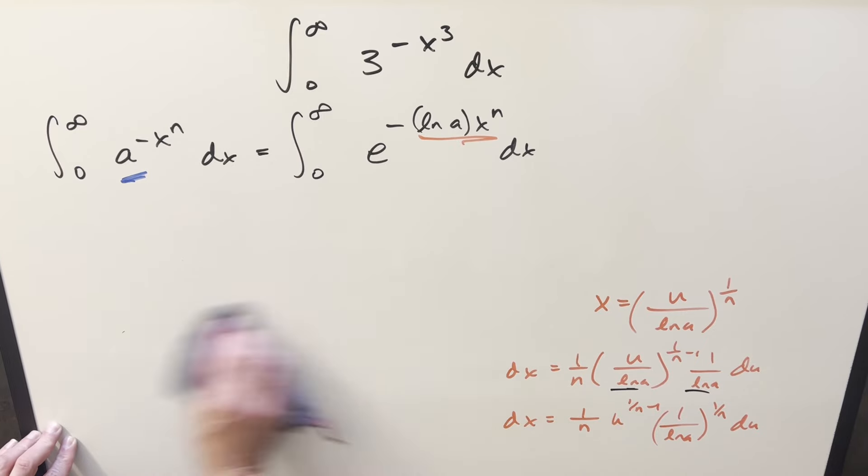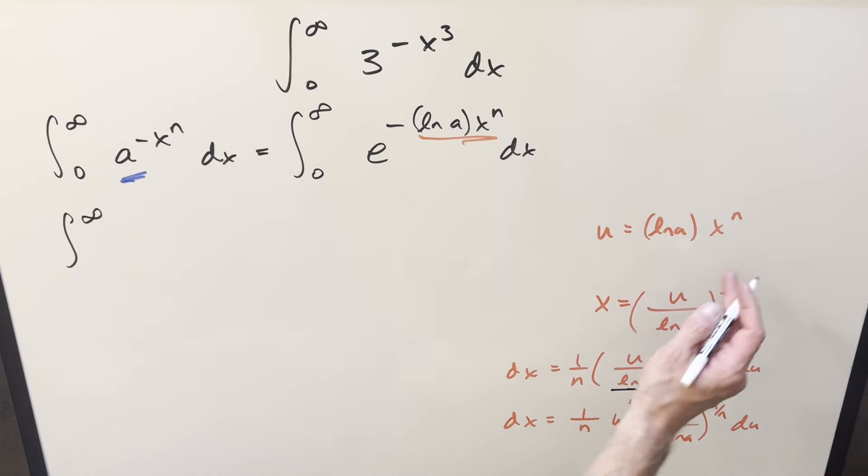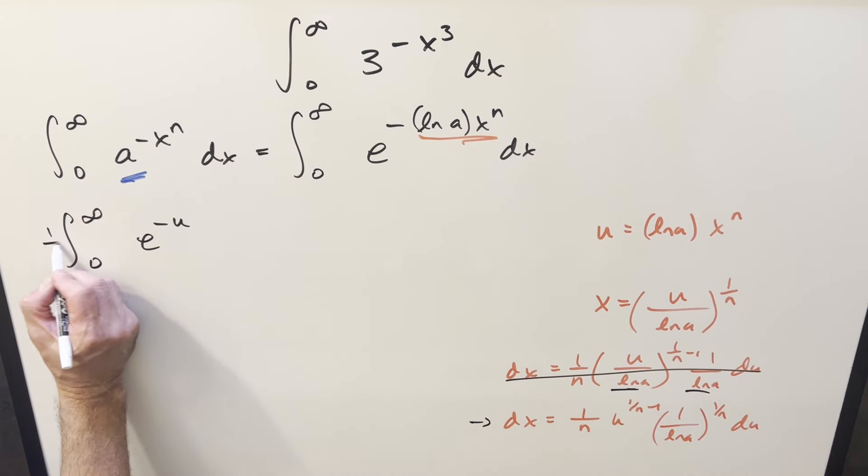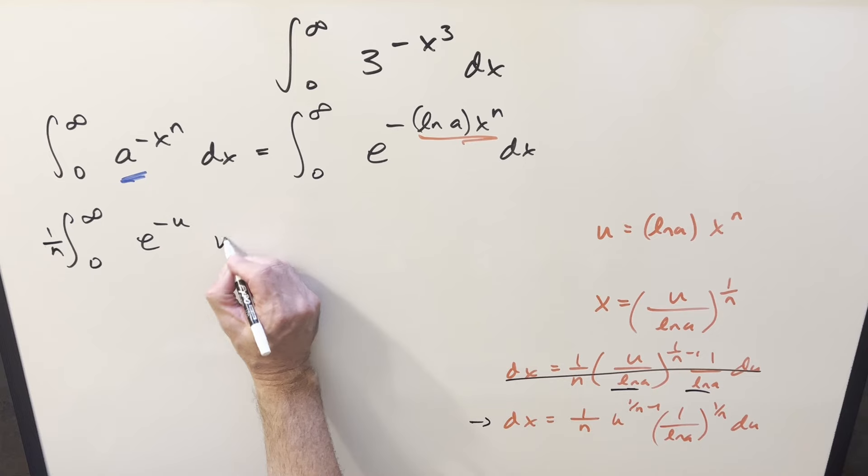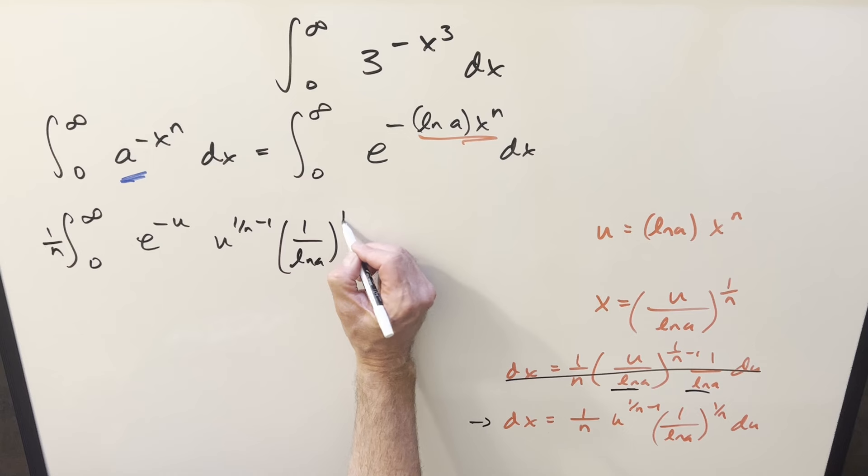Okay, so now we're ready to substitute with all the values we have over here to the right. So first, so first updating our bounds, when you plug in infinity, it's still going to be infinity. You plug in 0 there, that's just going to be 0. Then what we did on this is this whole thing transforms just e to the minus u, and then we need our dx value here and get rid of this one. First for the 1 over n, let's bring that out front as a constant. Then we'll have this u to 1 over n minus 1, and then our natural log piece, 1 over ln a to the 1 over n.